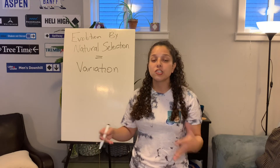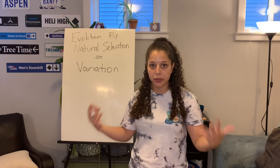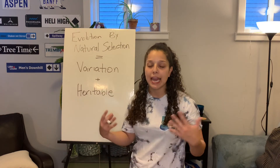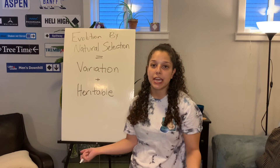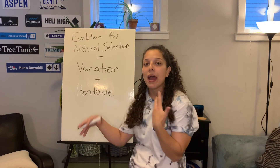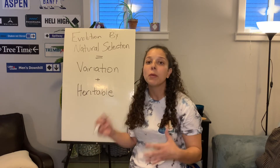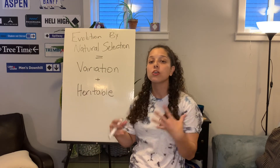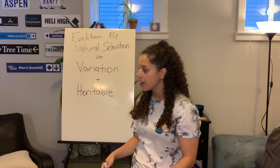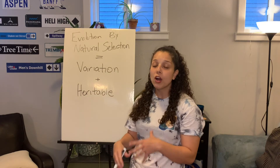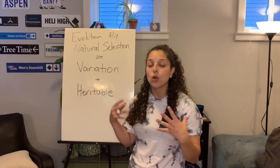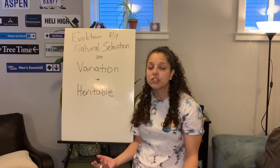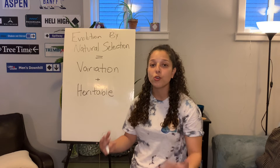The second requirement is heritability. Not only must there be variation in a trait, but that trait must also be heritable. It's not enough for someone to have variation in muscle mass from lifting weights, because that's not something passed down from generation to generation. There must be variation and heritability. In the HIV example, once a virus acquired a mutation it passed that mutation on to its next generation.